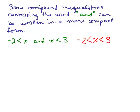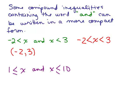So if this was the problem, our solution written in interval notation would just look like this — it's in between negative 2 and 3. Here's another example: 1 is less than or equal to x and x is less than or equal to 10. How could we write that in compact form? Go ahead and try that and then write the answer using interval notation.